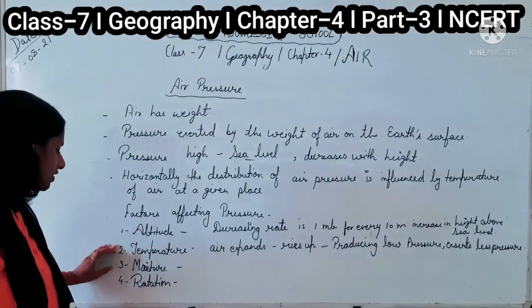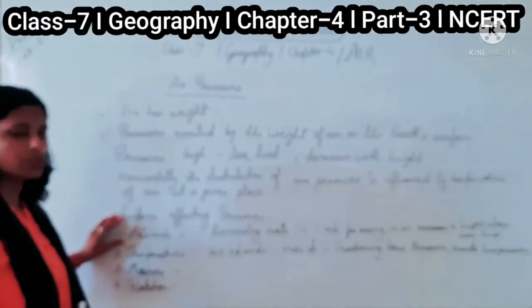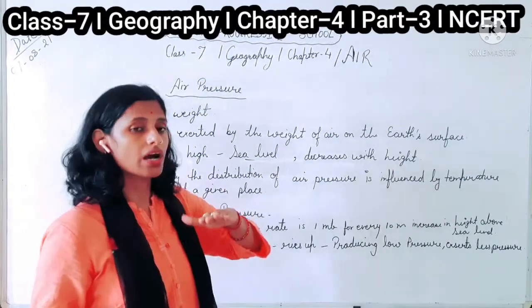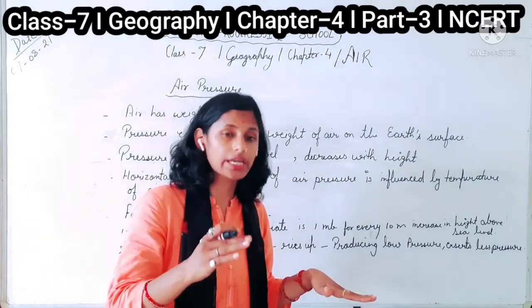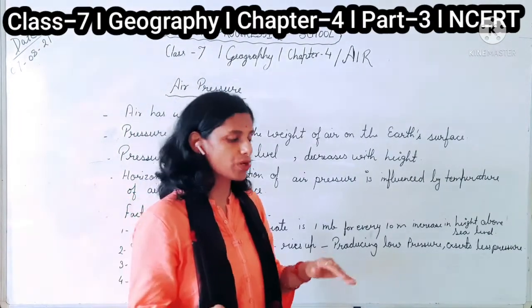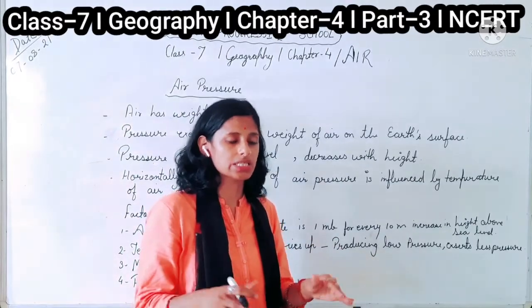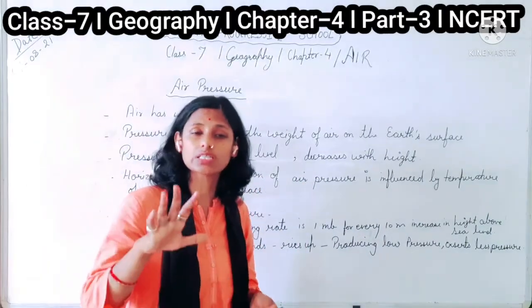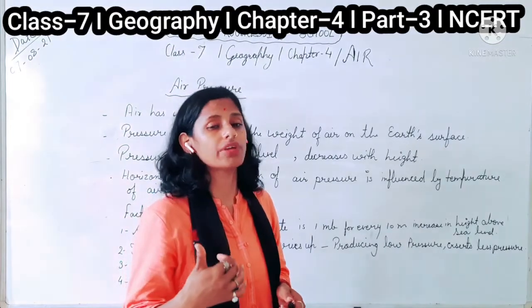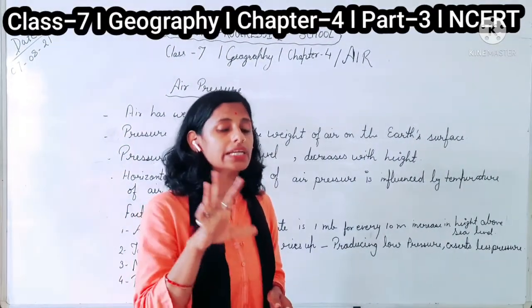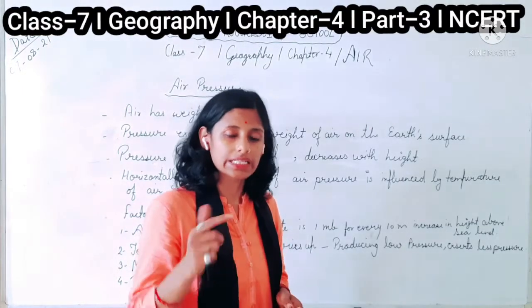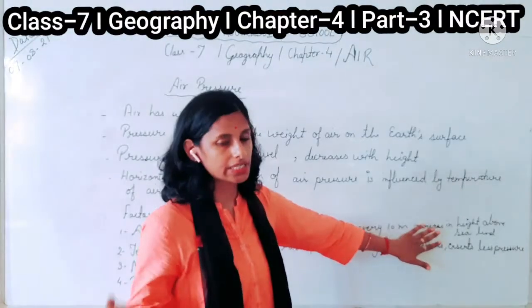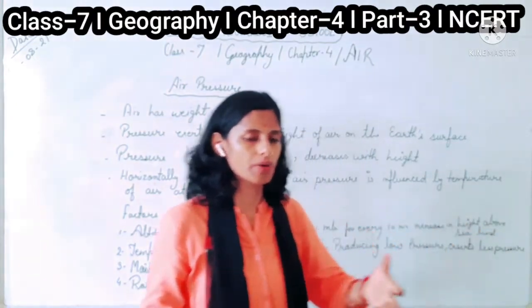What is the effect of altitude? When we go higher in the sky, the density of the air is low, and when we are at sea level, the air pressure is high because there are many gases at sea level. As discussed in the structure of the atmosphere, 90% of the air exists in the troposphere. The pressure decrease rate is 1 millibar for every 10 meters increase in height above sea level.